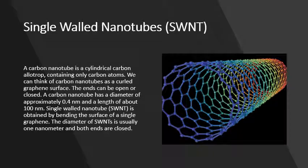Single-walled nanotubes. A carbon nanotube is a cylindrical carbon allotrope containing only carbon atoms. We can think of carbon atoms as a curled graphene surface. The ends can be opened or closed. A carbon nanotube has a diameter of approximately 0.4 nm and a length of about 100 nm. Single-walled nanotubes are obtained by bending the surface of a single graphene layer. The diameter of single-walled nanotubes is usually 1 nm and both endings are closed.